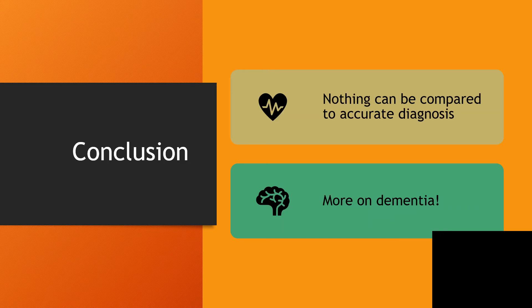In conclusion, nothing can be compared to an accurate diagnosis. Now you know what frontotemporal dementia is all about, and you know you can do little as far as pharmacological interventions are concerned. Psychotherapy is the hallmark of treatment here, and my hand goes out to the family members and healthcare givers who will be supporting these wonderful people. Thanks for listening to my presentation.